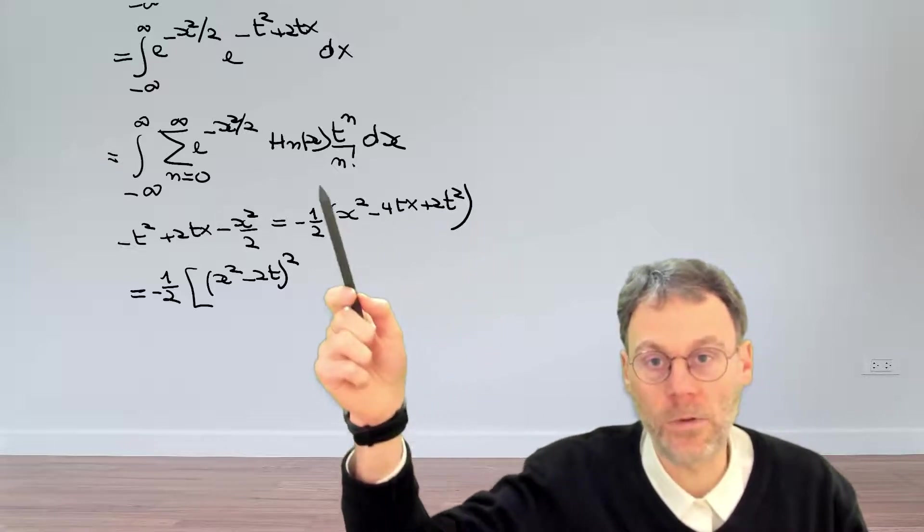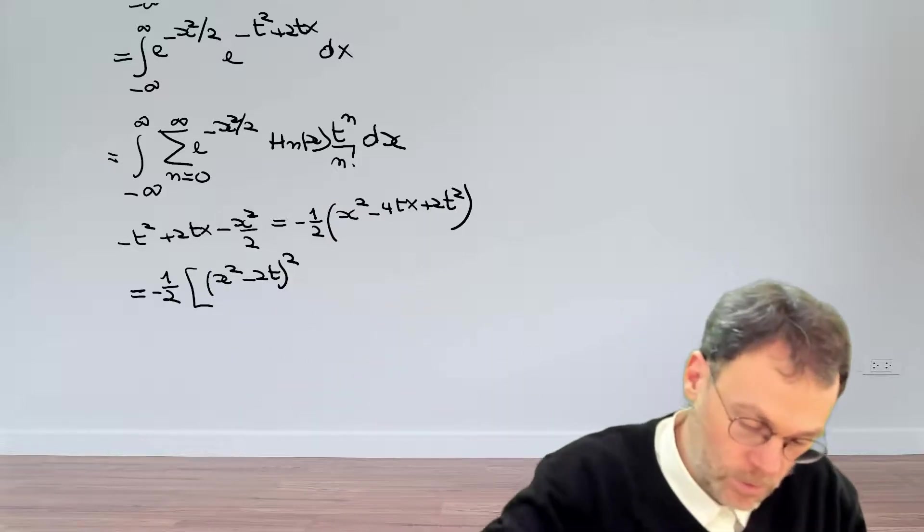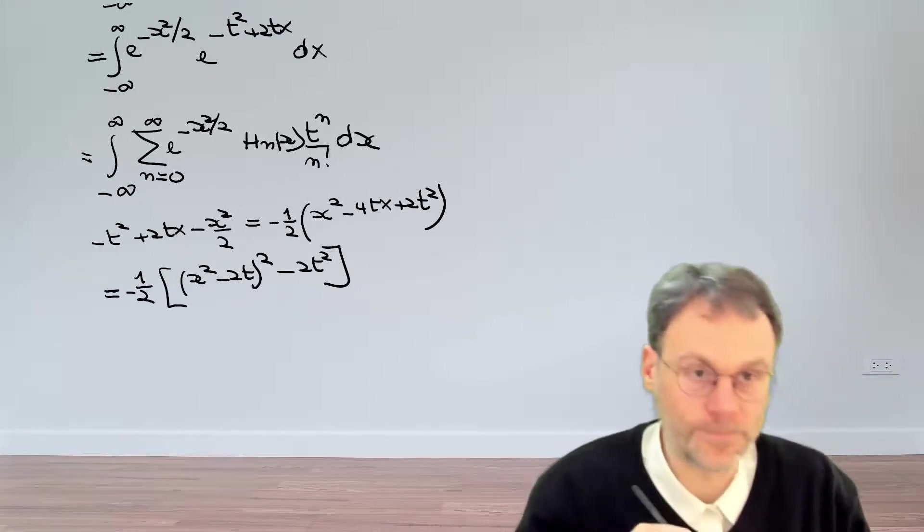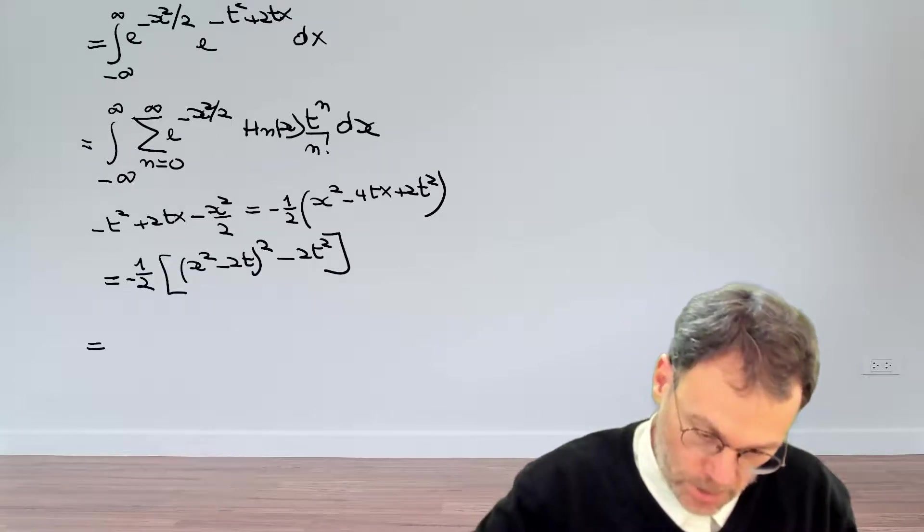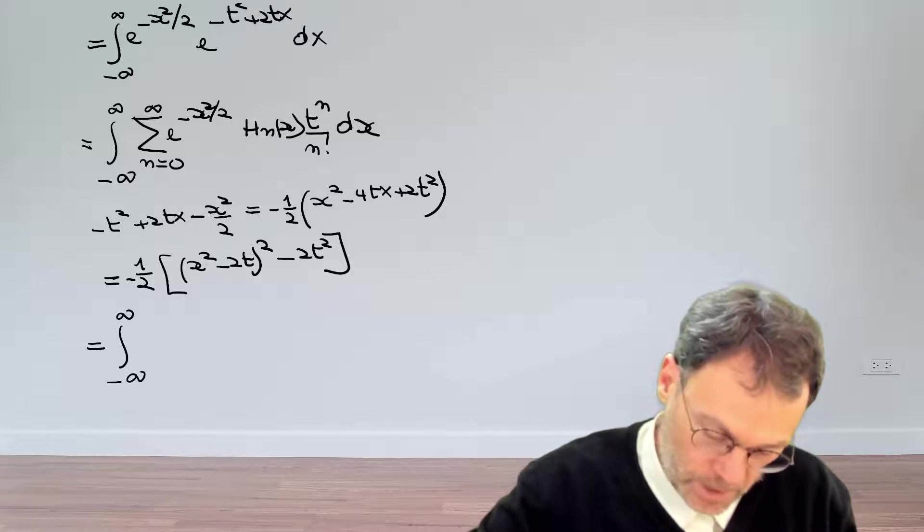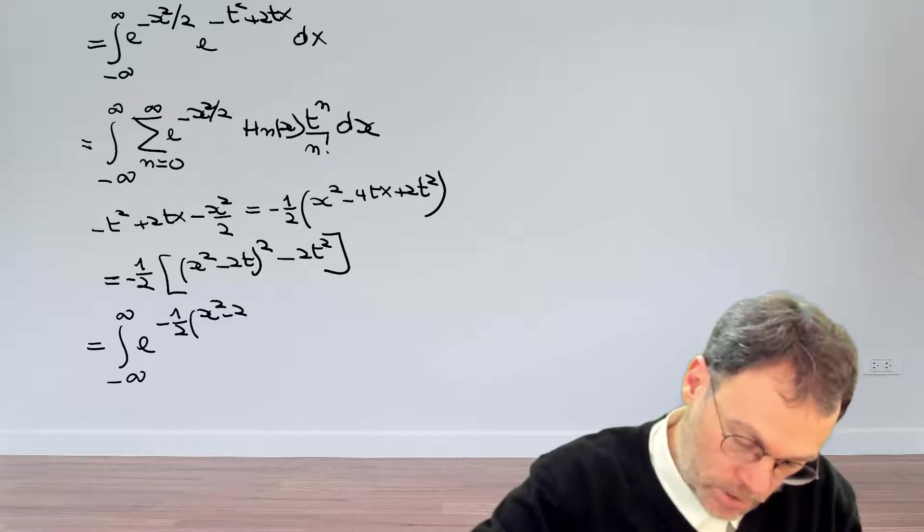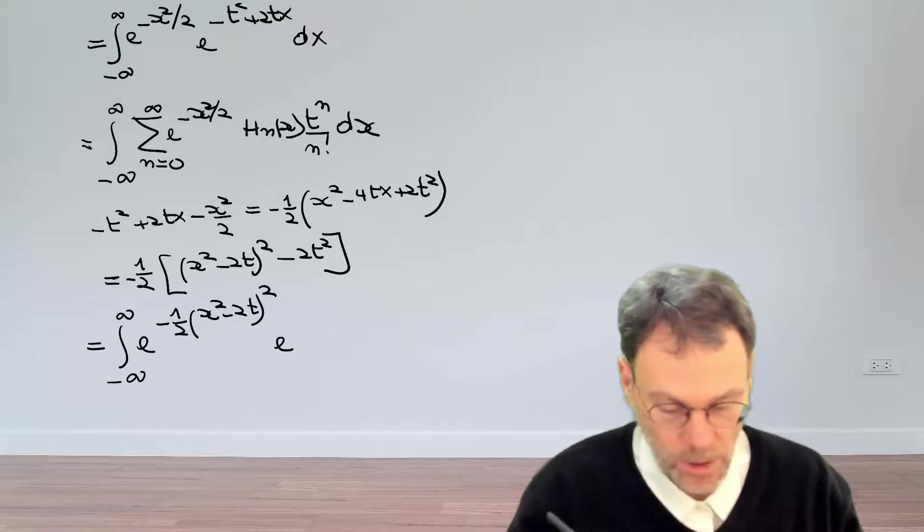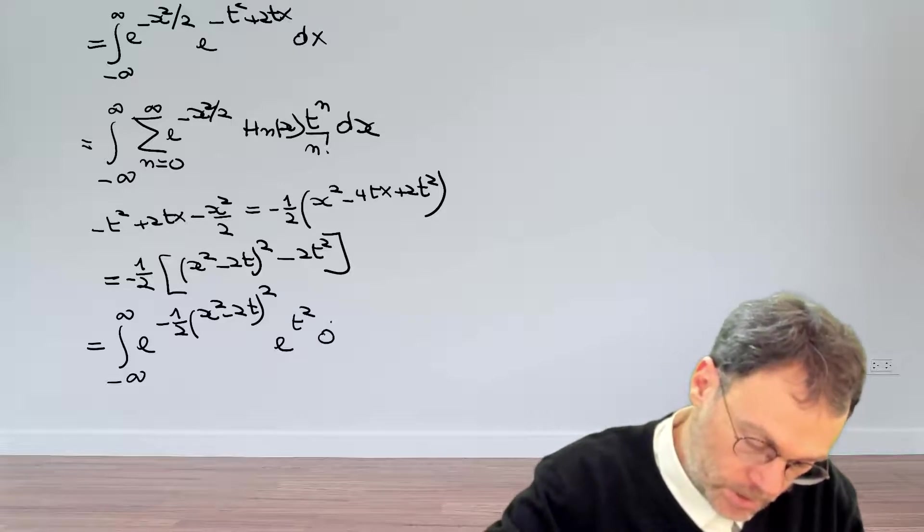So if we add 4t squared here, we can complete the square. And then minus 4t squared, 2 minus 4 gives us a minus 2, so minus 2t squared. So we've massaged the integral a little bit, so let's see what we have now. We have the integral from minus infinity to plus infinity. Exponential minus 1 over 2 x squared minus 2tx squared. And then we have exponential, the minus 1 half cancel, exponential t squared dx.